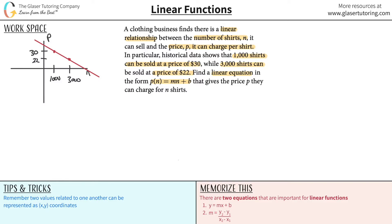If you can make the connection - that's the most important connection - if you can make the connection that these two values, the thousand and the 30, and the 3,000 and the 22, represent two points, that's the key to the problem. So n is kind of like x, the p here, price per shirt, is kind of like y. We write our ordered pairs as x comma y, so why don't we do this: let's write the coordinates for the point of a thousand shirts costing thirty dollars per shirt. So n was like the x value, that comes first, comma then 30. And then this one, 3000 comma 22.